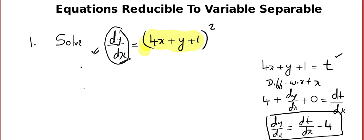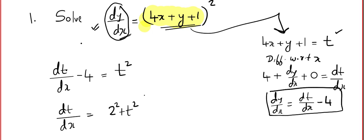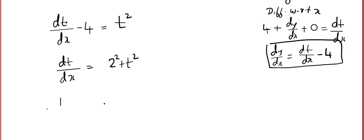Now, substitute this and trust me it will be variable separable. So what can we plug in instead of dy/dx? dt/dx - 4 and that will be equal to t squared because you call this as t. Like I told you in the last video, now we have two variables t and x and it is guaranteed it will become variable separable. So we can write this as 4 + t² or 2² + t² and separating we get 1/(2² + t²) dt = dx. So we are already separated. So time to integrate.